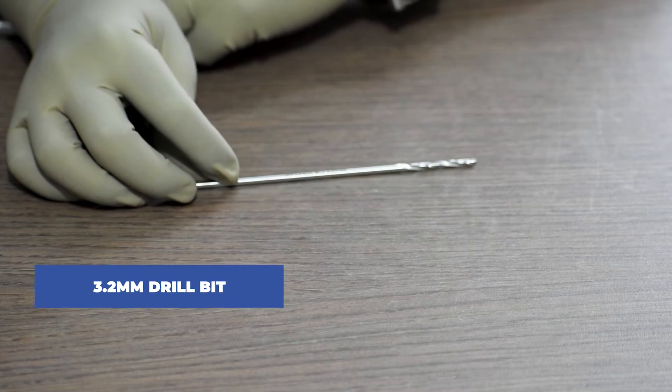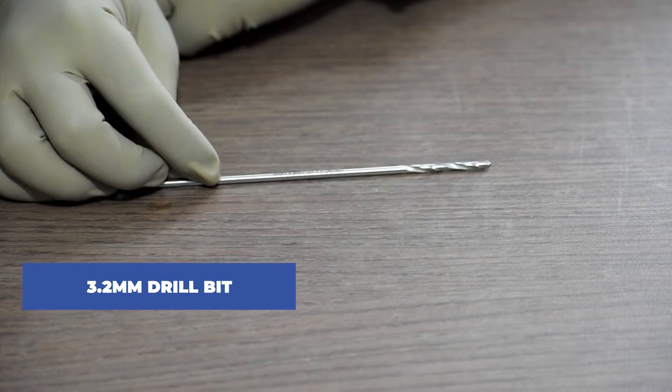And lastly, 3.2mm solid drill bit. Now, let us understand the process of fixing a 6.5mm cannulated cancellous screw.